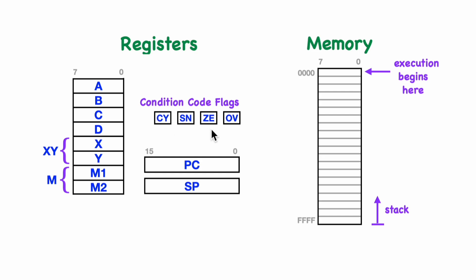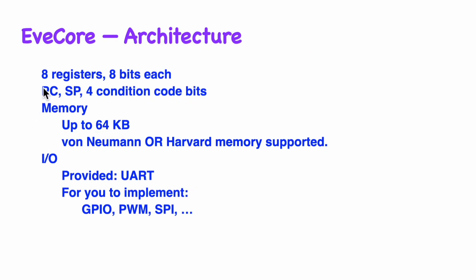Some of the registers can be combined to form 16-bit register pairs for use in memory indexing. In addition, there are 4 condition code bits that can be used for conditional branching. So to repeat: we have 8 registers of 8 bits each, a program counter, a stack pointer, and 4 condition code bits for testing and conditional branching. We can support up to a 64 kilobyte main memory, and it's interesting that the EVE Core can be implemented either with a von Neumann or a Harvard approach. With a von Neumann approach you have just a single unified memory, but with a Harvard implementation the program memory is separate from the data memory.